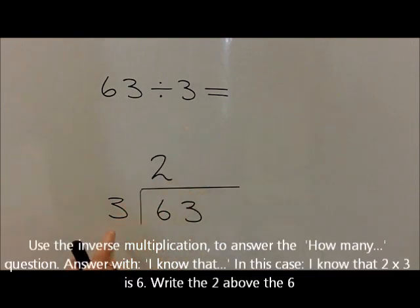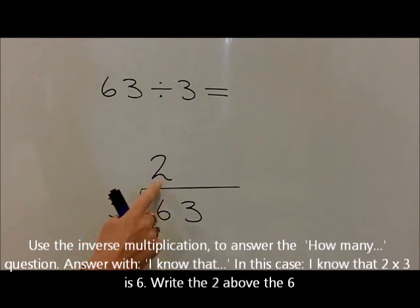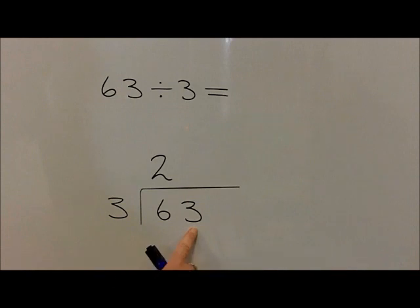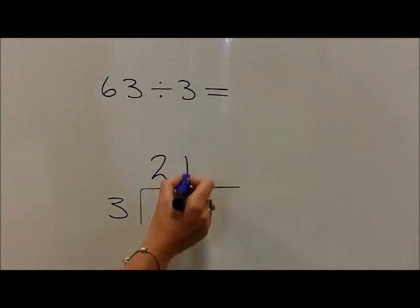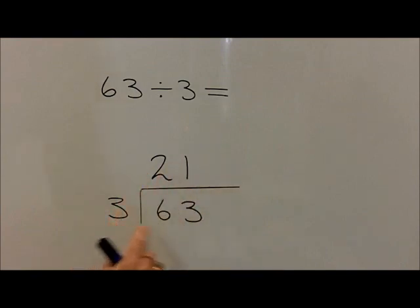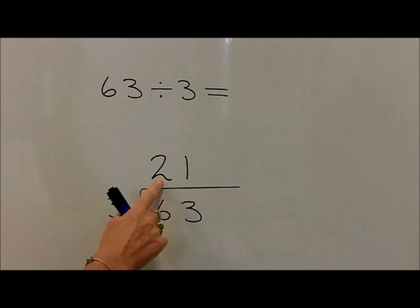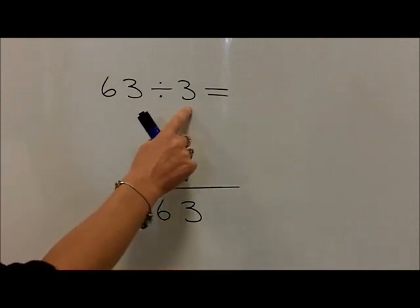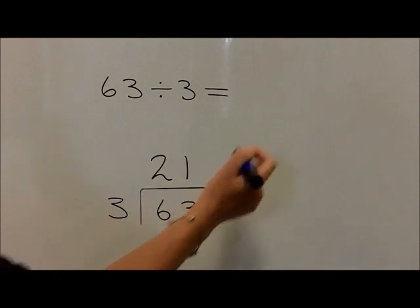So we write the 2 above. Because 2 threes are 6, there's no number to carry, so we now repeat the question: how many 3's are in 3. Children should know from the inverse times table that 1 times 3 is 3. There's therefore no remainder, so the answer is 21. So 63 divided by 3 is equal to 21.